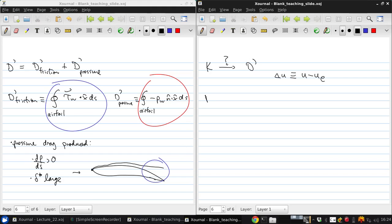So if we do that, then P is the integral of UE minus U, rho U dn. Using our definition, we can write this as integral of negative delta U, rho U dn.